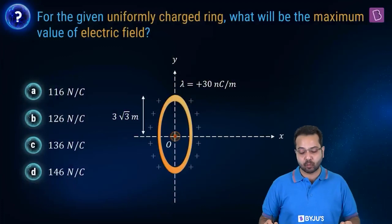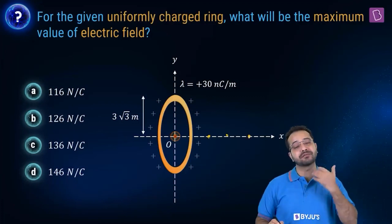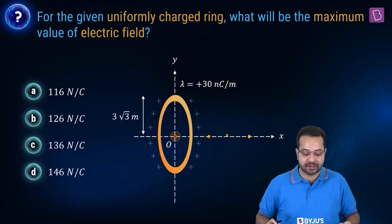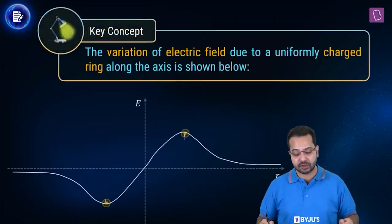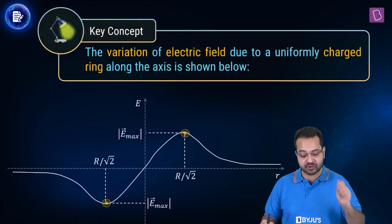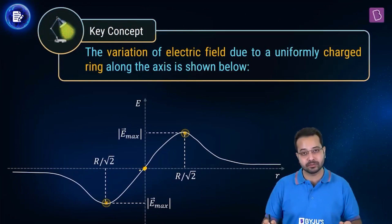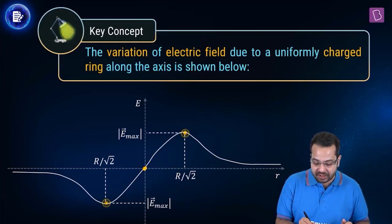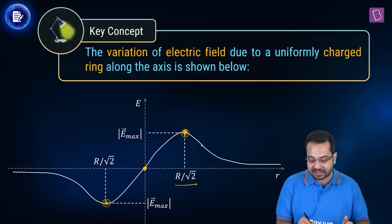For the given uniformly charged ring, what will be the maximum value of electric field? We have a uniformly charged ring and are looking at points on the axis. The key concept is the variation of electric field due to a uniformly charged ring along the axis: at the center the field is 0, it increases as we move away, reaches a maximum at r = R/√2, then decreases back to 0.